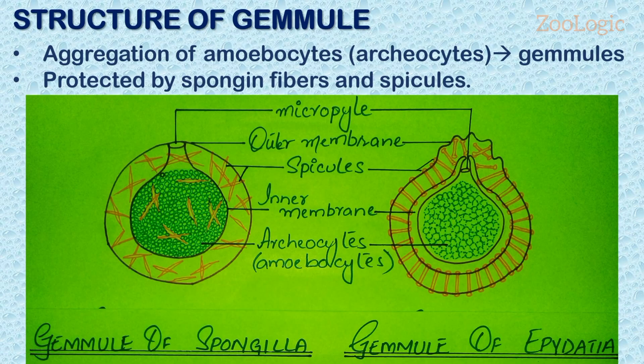If we have a close look at the structure of gemmules, they are an aggregation of amoebocytes known as archeocytes. These amoebocytes are totipotent — that is, capable of giving rise to any other type of cell. The mass of archeocytes is surrounded by a protective layer. As shown in the diagram, the protective layer is formed by collagen or sponge fibers and may be reinforced by spicules. This diagram demonstrates two types of gemmules from two different sponges. Since gemmules withstand harsh environments, they are an excellent means of colonization.